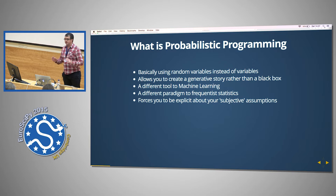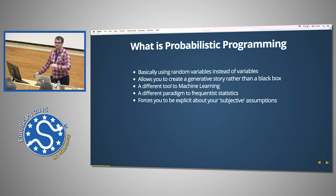So I'm going to give you a three-year PhD in probabilistic programming in two seconds. You basically use random variables instead of normal variables. That's it. So the really important thing is that this allows you to create a generative story rather than a black box method. I'm going to compare this to classical machine learning in a second. It's a different paradigm to frequentist statistics. It forces you to be explicit about your subjective assumptions. I'm not getting involved in any troll wars about frequentism versus Bayesian statistics. That's just an easy way to die.